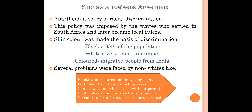Another problem was that public places and transport were separate for blacks and whites — buses, trains, schools, libraries, colleges, beaches, etc. These were separate for the two groups: whites and non-whites. This was called the policy of segregation, meaning separate. Non-whites could not even visit the churches where whites worshipped.